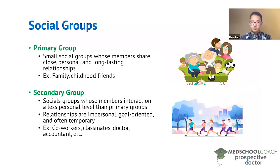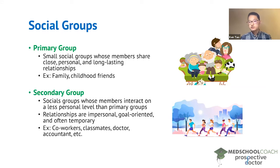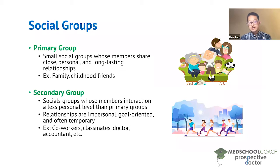We can now compare with secondary groups. Secondary groups are more distant than primary groups — a group whose members interact on a less personal level. The relationships in a secondary group are typically impersonal, goal-oriented, and often temporary. Some examples include co-workers, classmates, your doctor, and your accountant.